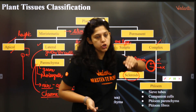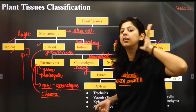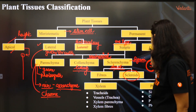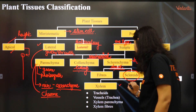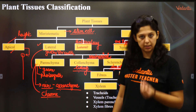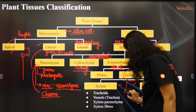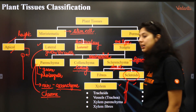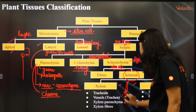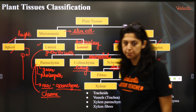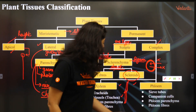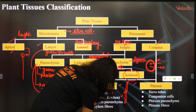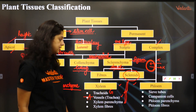Complex permanent tissue is not made up of a single type of tissue, but a variety of them. So complex tissues are xylem and phloem. Tracheids carry water — they are hollow and joined end-to-end in gymnosperms. Vessels are found in angiosperms, supported by xylem parenchyma and xylem fibers.